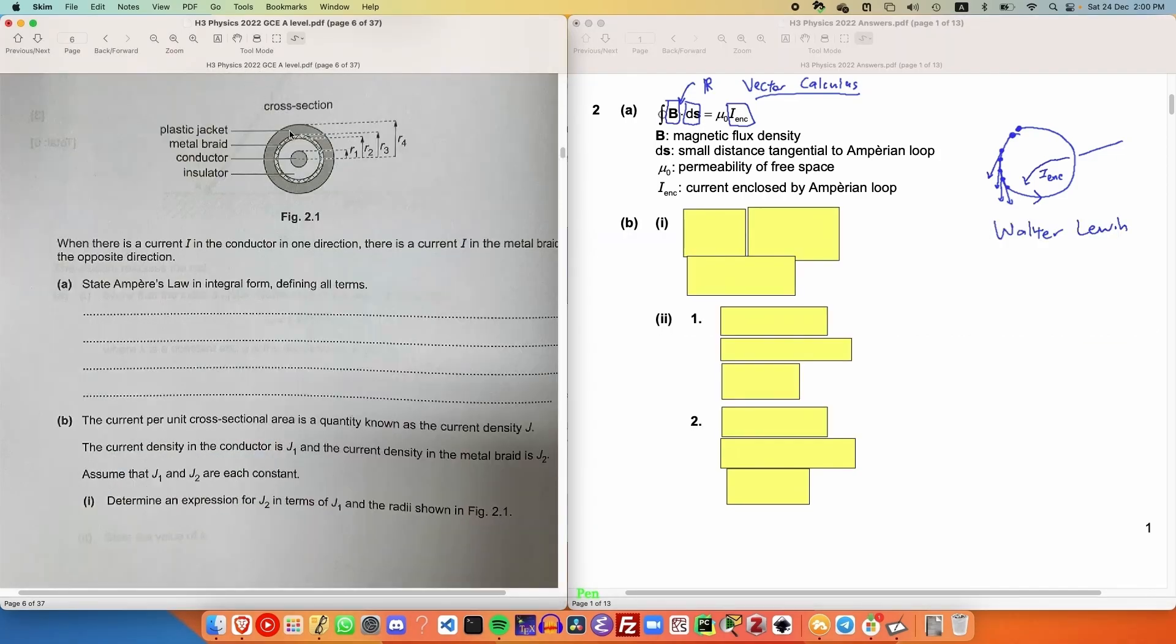Now the way that the coaxial cable will work is that current will flow through the conductor middle in one direction, let's say out of the page, and at the same time, current flows the other direction through the metal braid into the page. The question tells us that the current density, which is defined as the amount of current in amperes per unit area, which is meter squared. The current density of the conductor is J1, and that of the metal braid is J2.